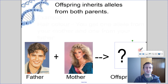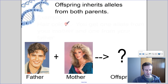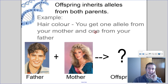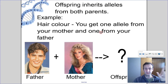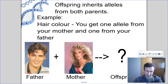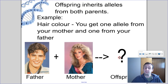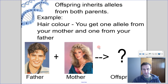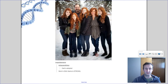Offspring inherits alleles from both parents. For example, hair color — you get one allele from your mother and one from your father, and the combination of alleles you get from mom and dad actually determines your traits. If we take a father with brown hair and a mother with blonde hair, what would you end up with in terms of offspring? That's what we're going to look at in genetics, and some things aren't incredibly clear — some of what we learn is simplified, but that's what genetics is all about.